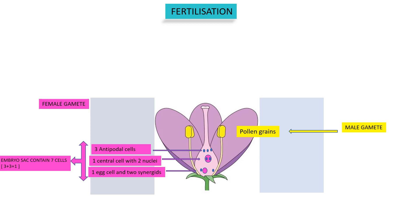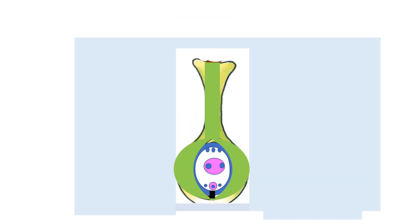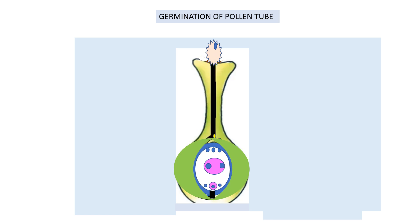What would happen in case the stigma receives the pollen grain of the same species? Let us see the microscopic structure of the pollen grain. It has a generative nucleus and a tube nucleus. The stigma starts secreting sugar, and then the pollen grain absorbs sugar and water from the stigma and bulges out to produce a tube known as the pollen tube. The tube nucleus controls the growth of the pollen tube as it grows down the style and then penetrates into the ovary. The tube nucleus, which had directed the growth of the pollen tube all the way down, then gets disintegrated.